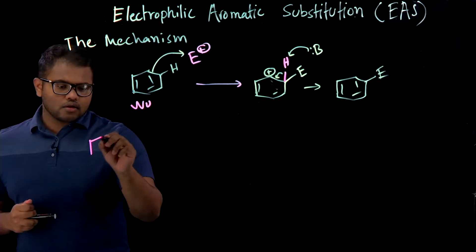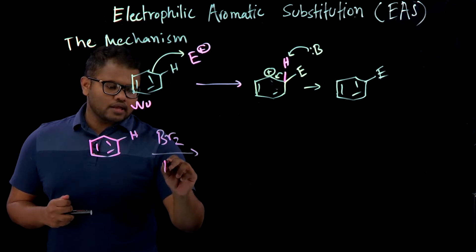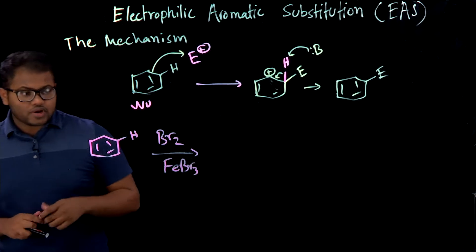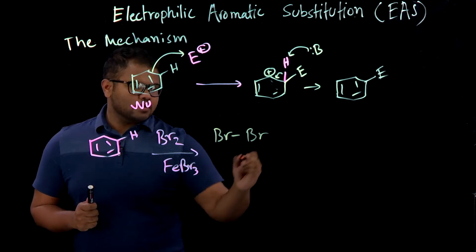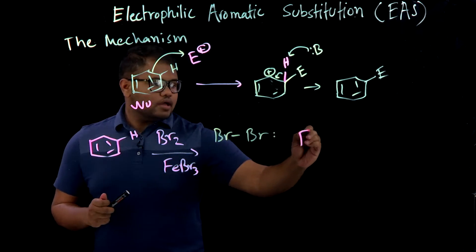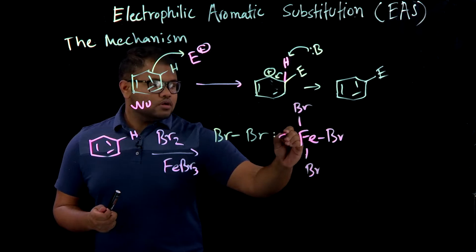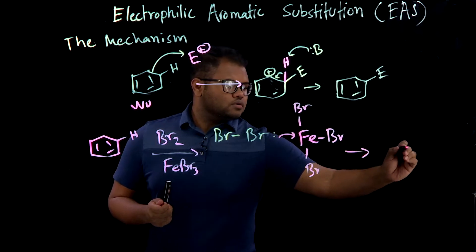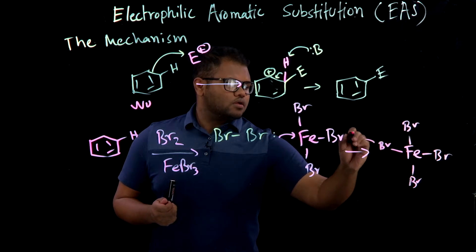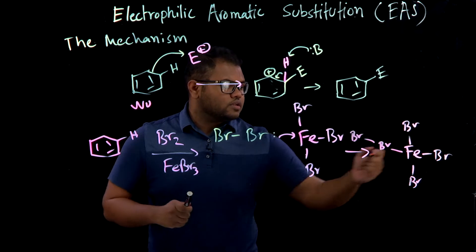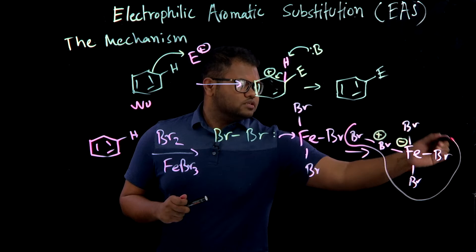Going back to our first example, how would this work with Br2 and FeBr3? So what happens is FeBr3 is a Lewis acid, so it accepts electrons, and you have Br2 here with lone pairs and here is the Lewis acid. It wants that electron, so then you get this intermediate with the minus charge on the iron and plus charge on the Br.